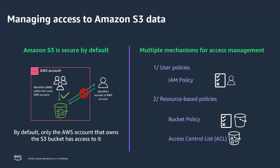To grant cross-account permissions, typically there are two ways. First, user policies, where you can use AWS Identity and Access Management to manage access to your Amazon S3 resources. You can create IAM users, groups, and roles in your account and attach policies granting them access to AWS resources, including Amazon S3. Second, resource-based policies. Bucket policies and access control lists are resource-based because you attach them to your S3 bucket and objects.